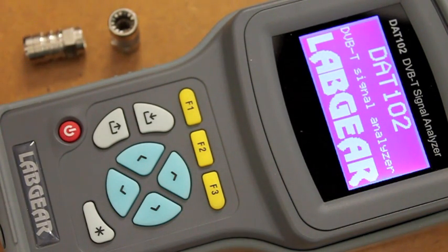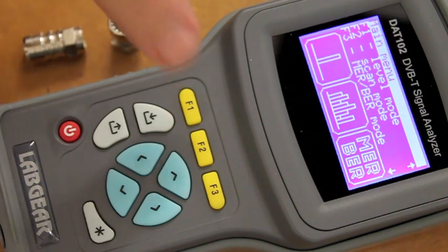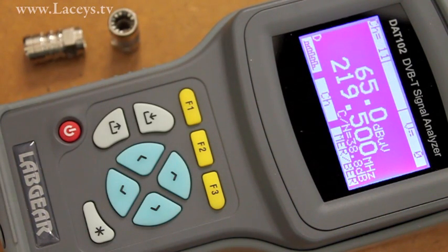Let's start with level mode. The meter shows channel number and frequency and can be tuned by either. Signal levels are displayed in dB microvolts with dB millivolts and dBm menu selectable.